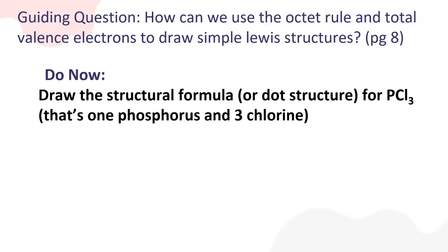Okay, we're going to get started on the notes for Unit 4, Lesson 7, Practice Makes Perfect, where we will look at the guiding question: how can we use the octet rule and total valence electrons to draw simple Lewis structures? So for your do now, you were supposed to draw the structural formula or dot structure for PCl3. So pause the video and do that.